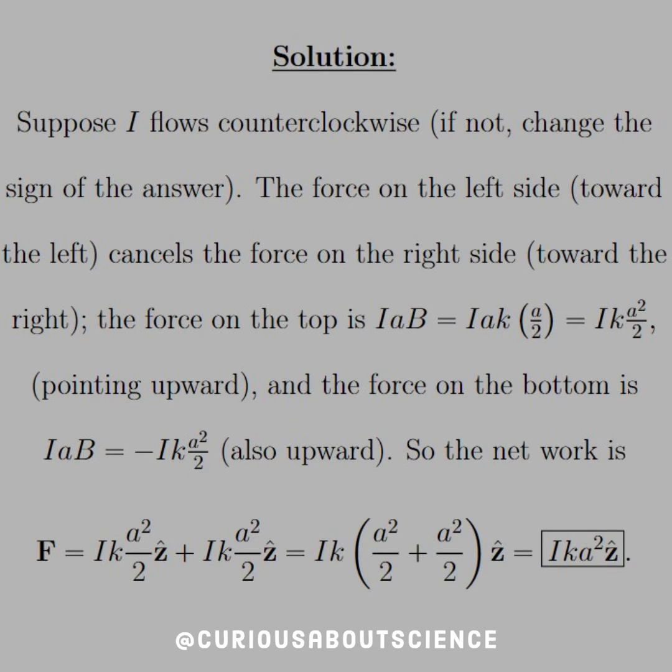The force on the left side towards the left cancels the force on the right side towards the right as we experienced in the example in the text. The force on the top is IaB, which we know that B is equal to kz, but we need to split up the difference so that's why we have a over 2.